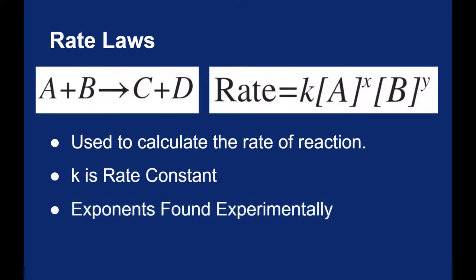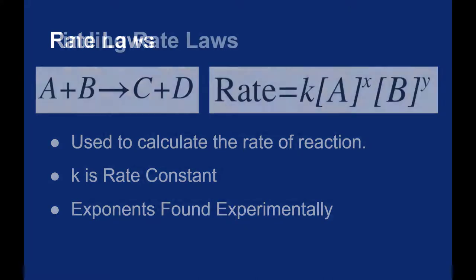We also have exponents X and Y. The rate equals the rate constant times the concentration of A to some power times the concentration of B to some power. These exponents have to be found experimentally.